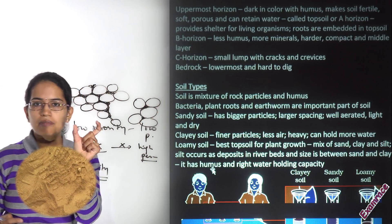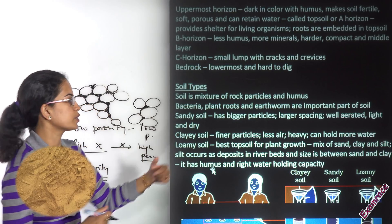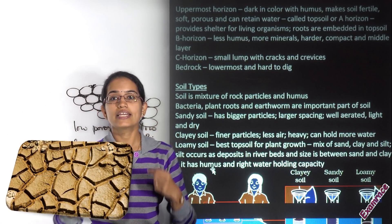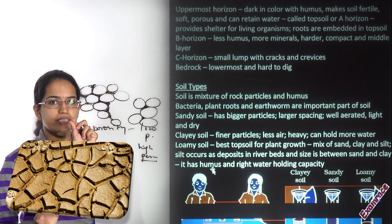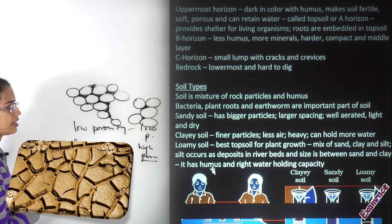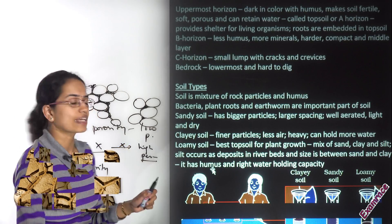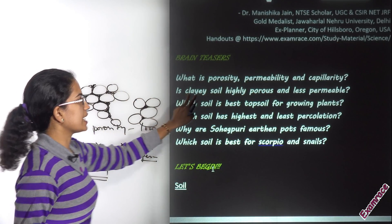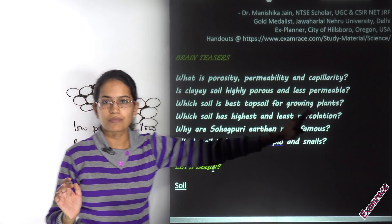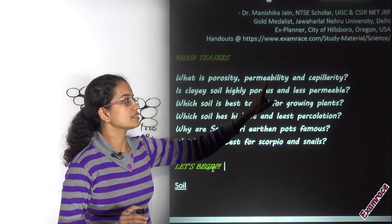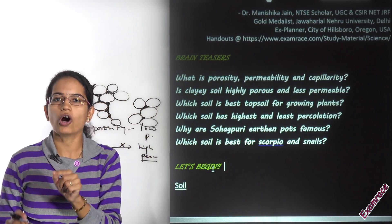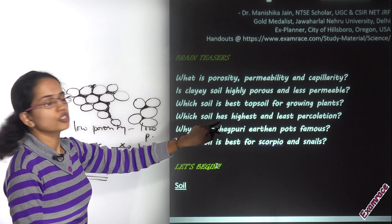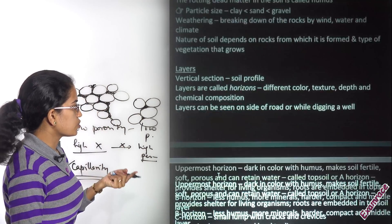Sandy soil has a bigger particle size, larger spacing, higher porosity, is well aerated, and light and dry in color. Clay soil has a smaller particle size and the capability to hold more water. Here comes a brain teaser: is clay soil highly porous but less permeable? Yes — it is highly porous but less permeable because the interconnections between pores are weak.